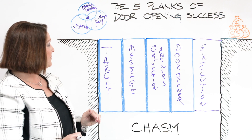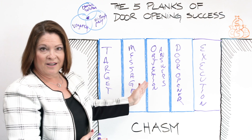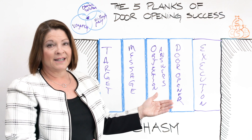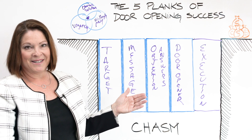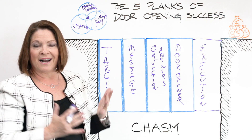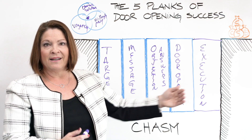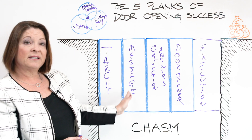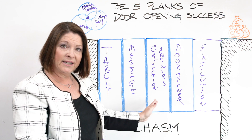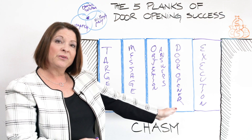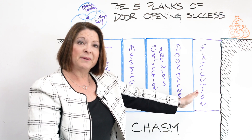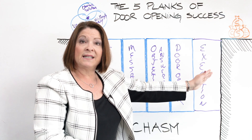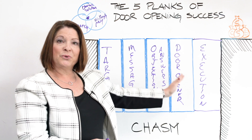Let's recap. Strategy before execution is the right way to do this — ready, aim, fire, not ready, fire, aim. Just because you have great information and great contacts does not mean you're going to get the meeting unless you select exactly the right prospects, have a spot-on message, spot-on answers for objections, and have the right person doing the work. That right person must spend enough time on the right activities to make a difference. Then the doors open significantly easier. Five planks of door opening success.